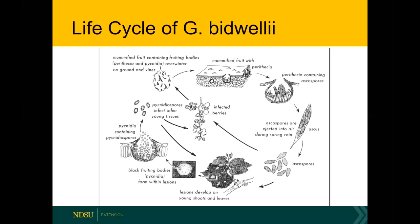Those primary spores will infect the leaves. The leaf tissue will produce a different type of fruiting body called a pycnidium. Once those pycnidia are producing conidia, there's a circular life cycle — conidia produced on leaves can infect new leaves or fruit. In turn, those are going to produce more pycnidia with more spores to infect more leaves and fruit. That's where the damage really takes place.